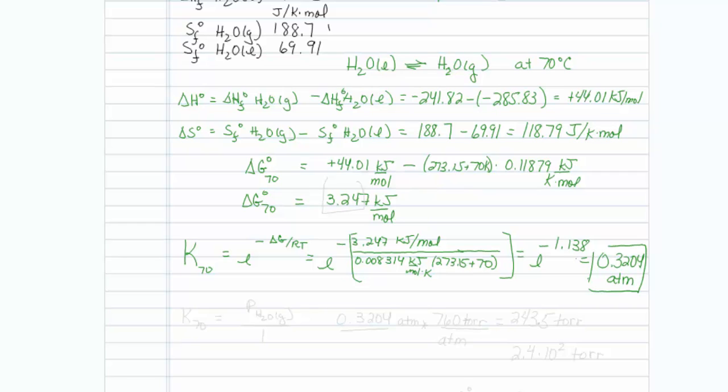So remember that that equilibrium constant at 70 degrees is going to be equal to the pressure of the water vapor over 1. So 0.3204 is my answer, except I have to say that it is in torr.